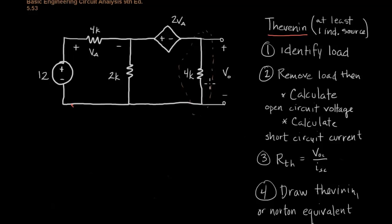Then we'll remove the load and redraw the circuit twice. Once we'll draw it as a short circuit across where the load was, and then we'll draw it as an open circuit where the load was. And we'll solve for the open circuit voltage and the short circuit current.